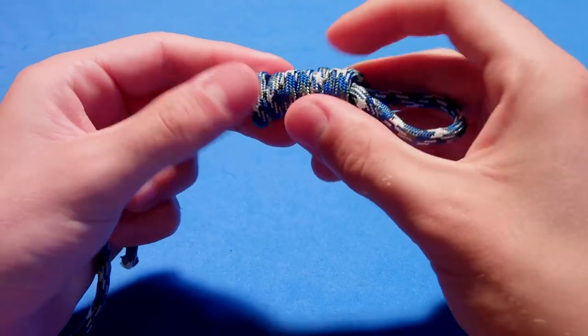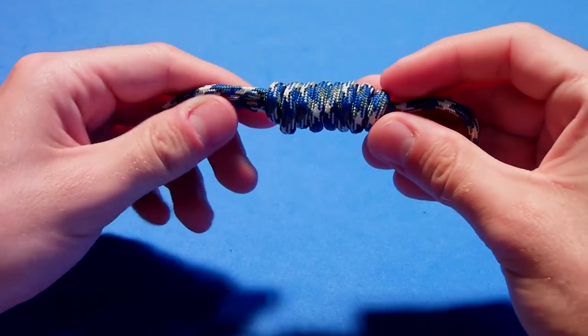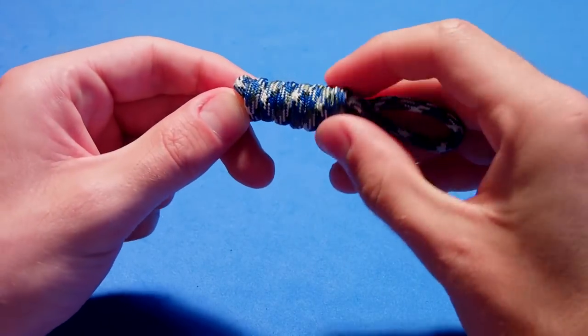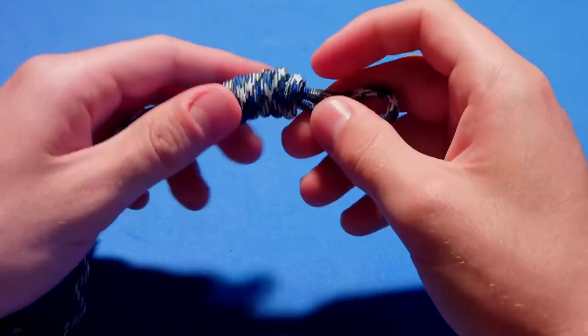To fix this, just rotate the lanyard like this, twist it. As you can see, everything is getting tighter. Then the longer one, pull it again a little bit. Looks much better. And one more time just to finish. As you can see the loose line right there, and that's it.